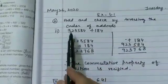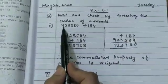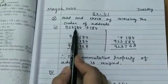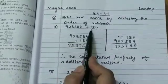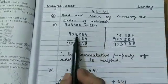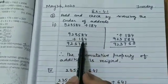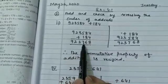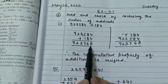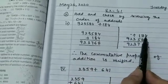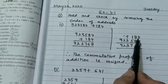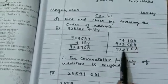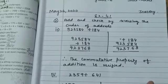I have written the second part. Look — 9,23,584 plus 184. First, we have done the addition as it is and got 9,23,768. Now we have changed the position — we have written 184 before and the other number after. Then we added again, and the answer is the same.